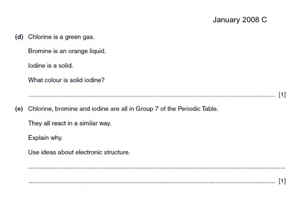Another past paper question: chlorine is a green gas, bromine is an orange liquid, iodine is a solid — what colour is it? It's a grey solid, as stated on the specification. Chlorine, bromine and iodine are all in group 7 of the periodic table and all react in a similar way. Explain why, using ideas about electronic structure. It's only one mark, so one point is needed: they all have 7 outer electrons.